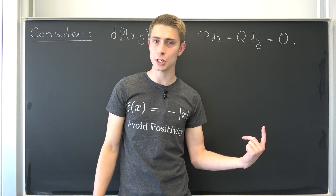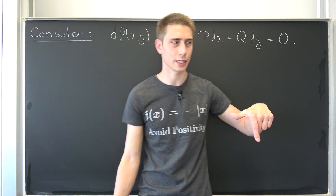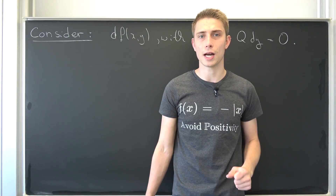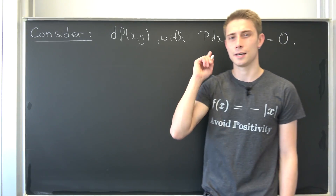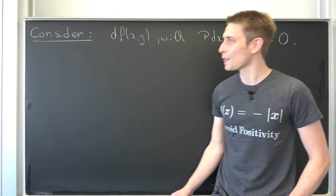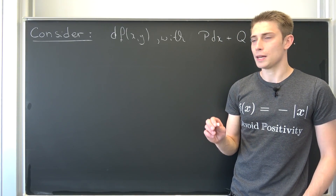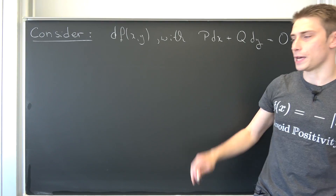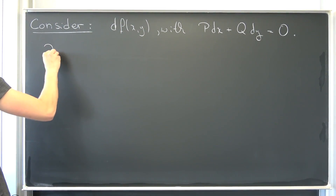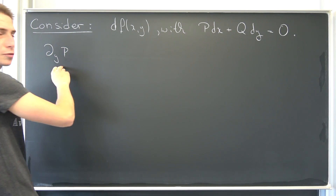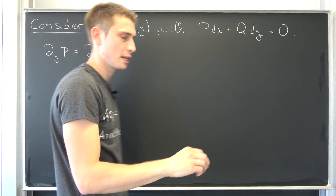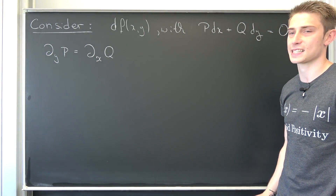We were talking about exact differential equations last time — doing this kind of abstract proof. Today we want to talk about a situation where our differential equation is not exact. Remember what it meant for a differential equation to be exact: if we had the condition that P differentiated partially with respect to y is equal to Q partially differentiated with respect to x, that's what it meant for our differential equation to be exact.